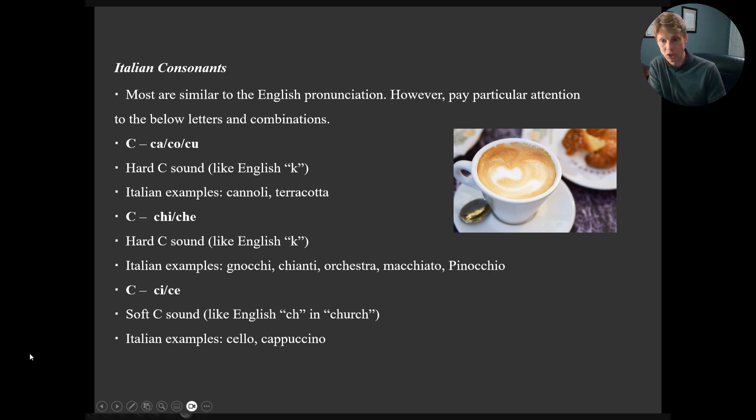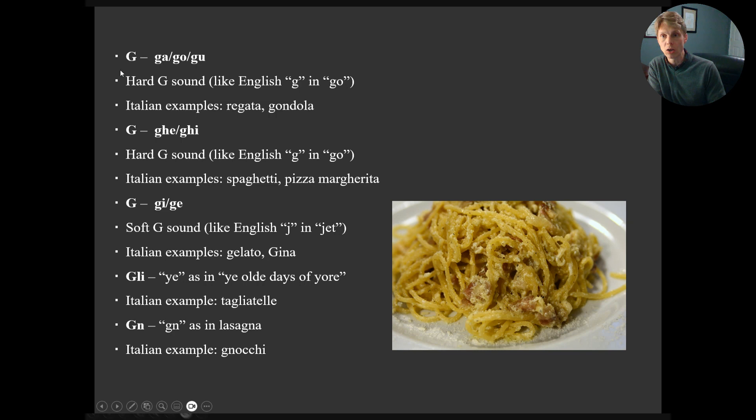And let's go to the Gs, because the G actually does the exact same thing with hard and soft. So instead of ca, co, cu, we have ga, go, goo. And that's a hard sound, like an English go. So a regatta, or a gondola, for example. And then the G, to preserve the hard sound in front of an E or an I, we stick an H in there. Again, H, think of hard, hard sound, when you see that H. Again, that's English G, as in go. So examples that you know, spaghetti, or pizza margherita. Okay, the ga, hard sound. But it becomes soft if we get rid of that H.